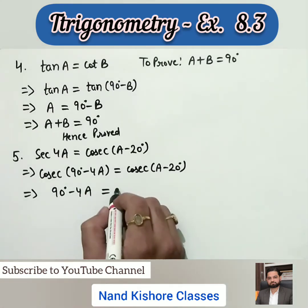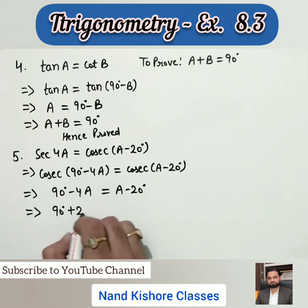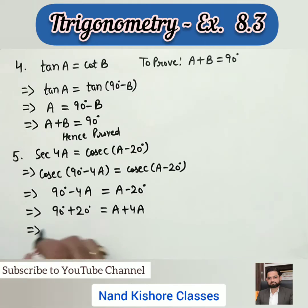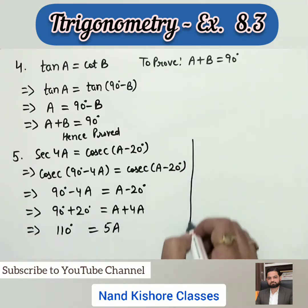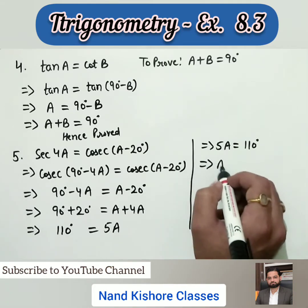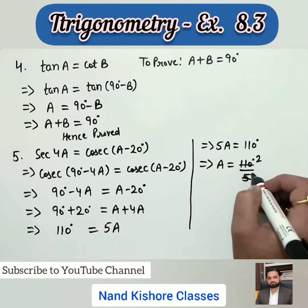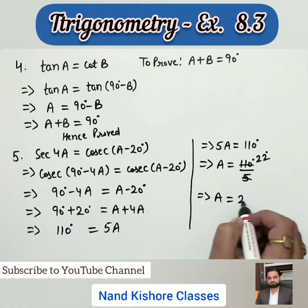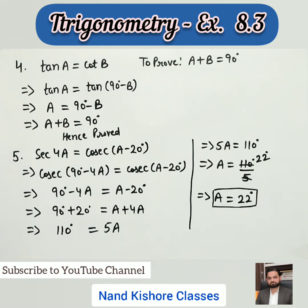Setting the angles equal: 90° - 4a = a - 20°. Rearranging — 20 comes to the left side (becomes positive), and -4a goes to the right side (becomes positive): 90 + 20 = a + 4a, so 110 = 5a. Therefore a = 110/5. Dividing gives a = 22 degrees. I hope you are clear with questions three, four, and five. Let's move to question number six.